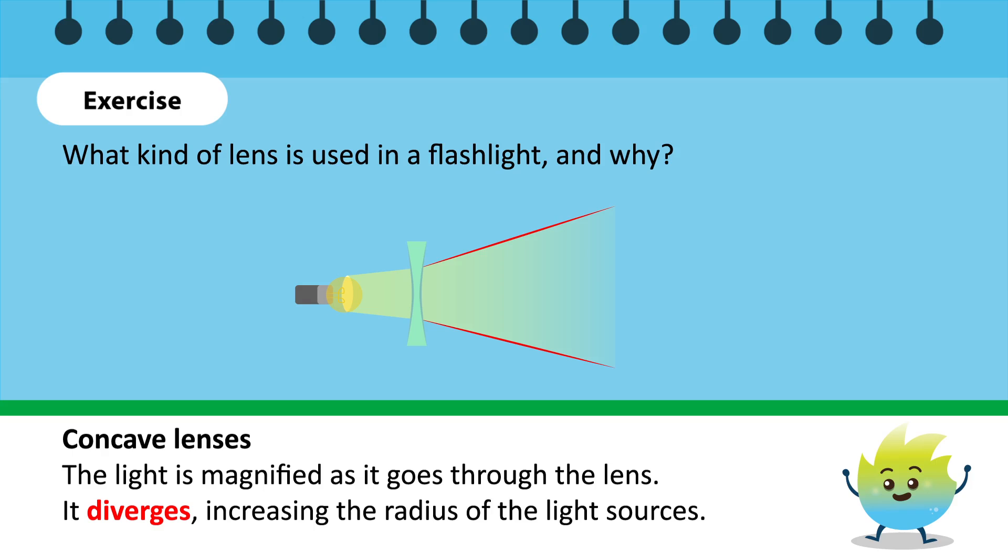Concave lenses are used in flashlights to magnify the light produced by the bulb. The light falls on the concave side of the lens, and the rays diverge on the other side. This increases the apparent radius of the light source, and provides a wider beam.